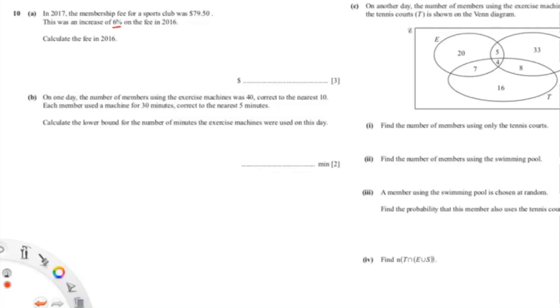This question is talking about percentage decrease. How do we find the percentage decrease? In 2016, it is 100%. Since they said in 2017 it's an increase by 6%, we know that in 2017 it would be 100 plus 6, which is 106%.